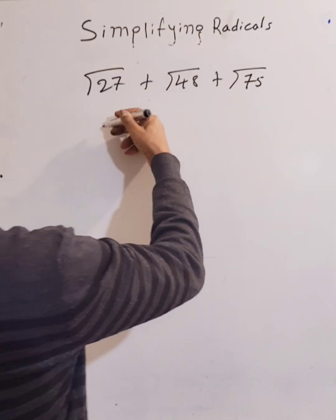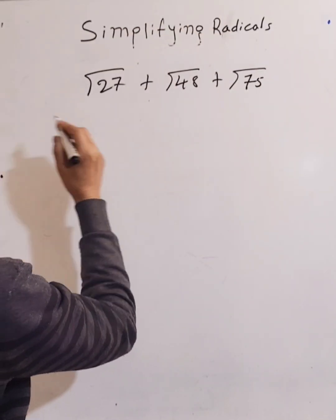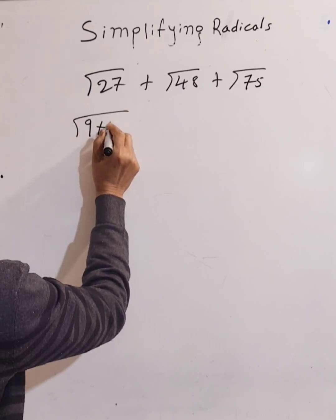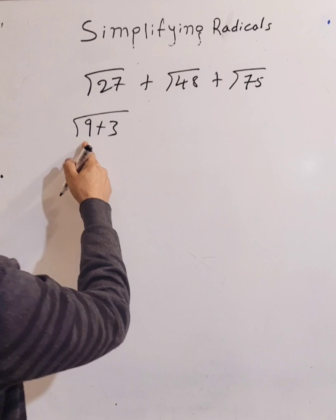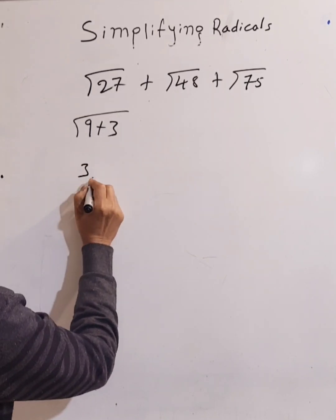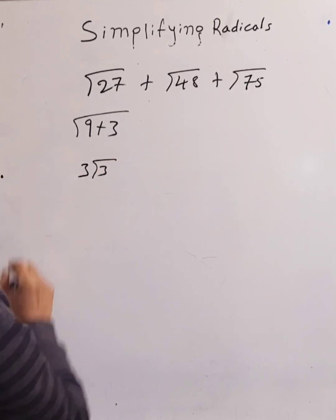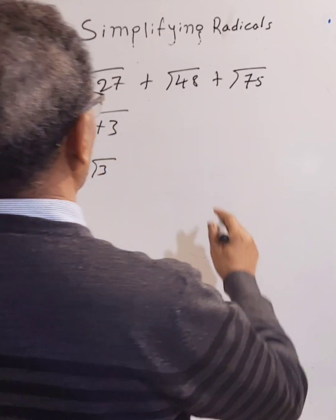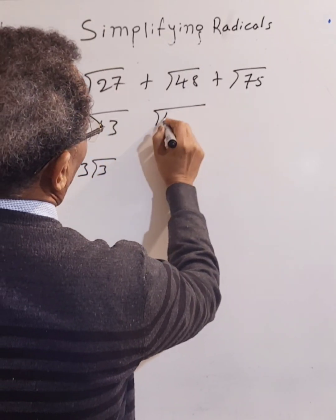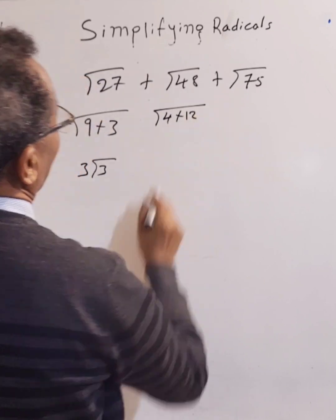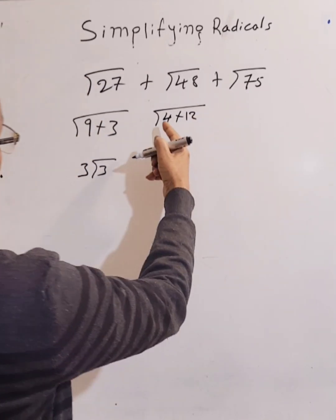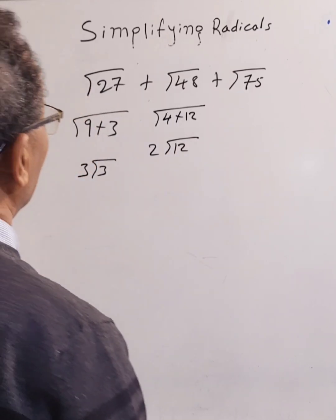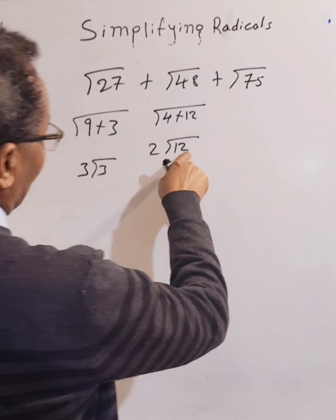Starting with √27: you can simplify it as 9 times 3, so square root of 9 is 3, times root 3. For √48, you can simplify it as 4 times 12, so square root of 4 is 2.